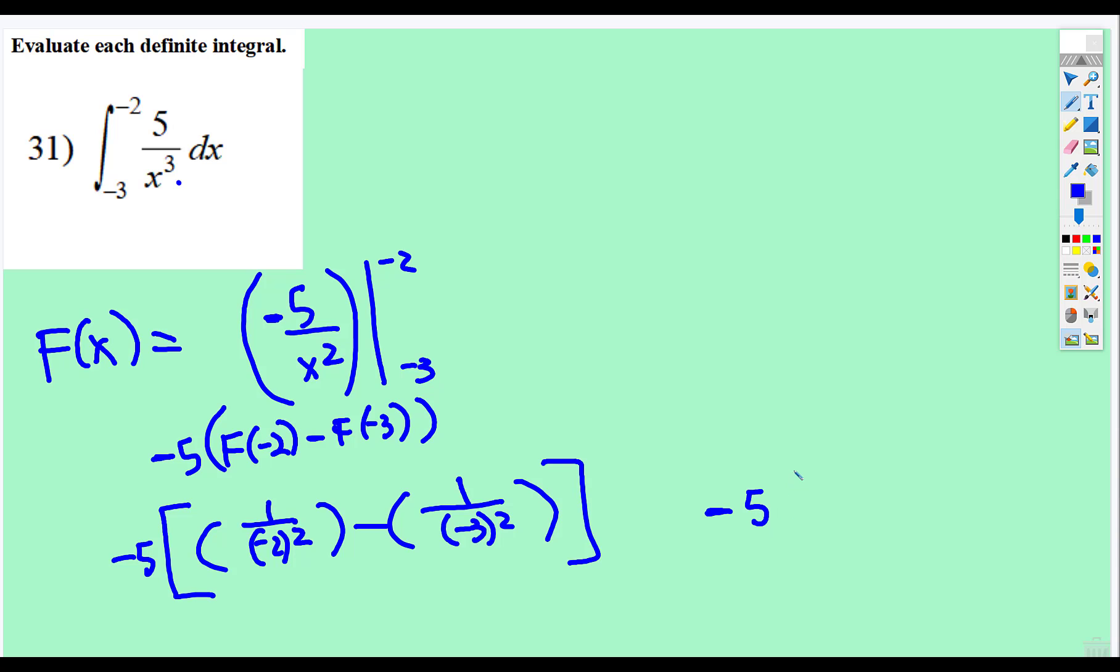So now we have 1 over negative 2 squared subtract 1 over negative 3 squared. So we have negative 5, 1 fourth subtract 1 ninth. Well, they need to have the same denominators. So I'm going to multiply this top and bottom by 9, so that becomes 9 over 36 subtract 4 over 36. Well, 9 subtract 4, and again, multiplied by 5, is negative 5 times 5 over 36. So it looks like what we have is negative 25 over 36.